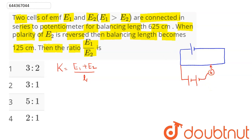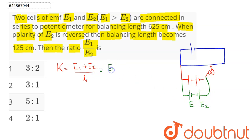If we reverse the polarity of e2 and connect it to the galvanometer, the net potential difference becomes e1 minus e2. Since e1 is greater than e2, the balancing length becomes 125 centimeters, which is l2.